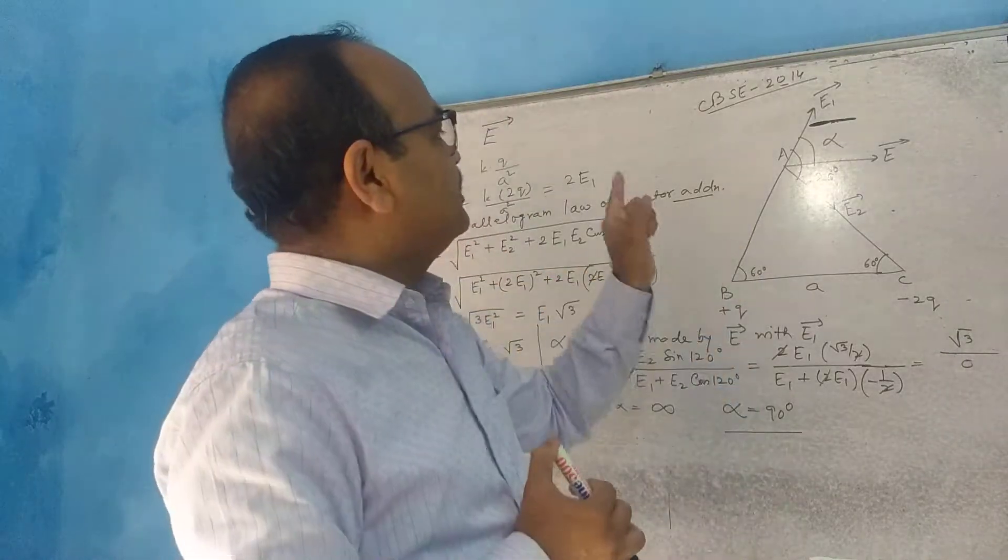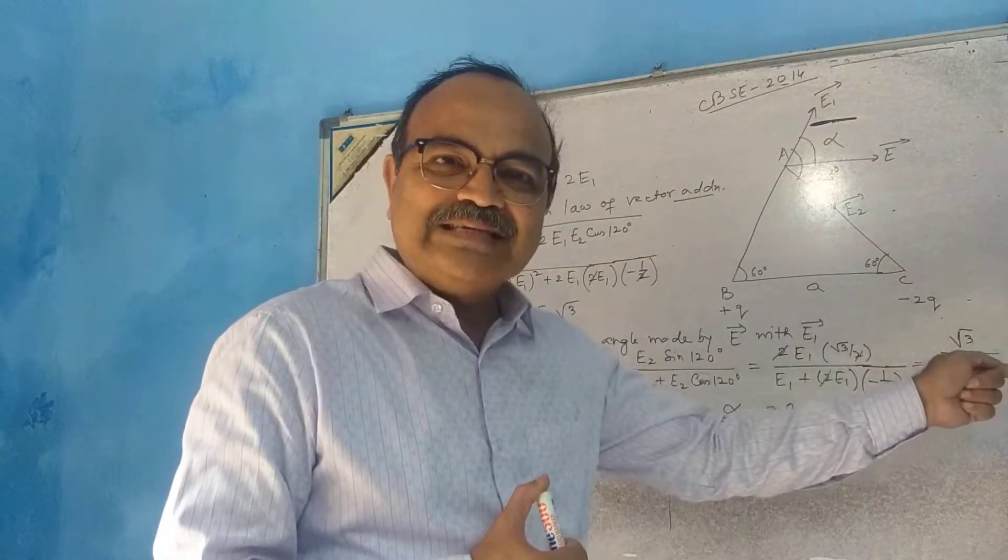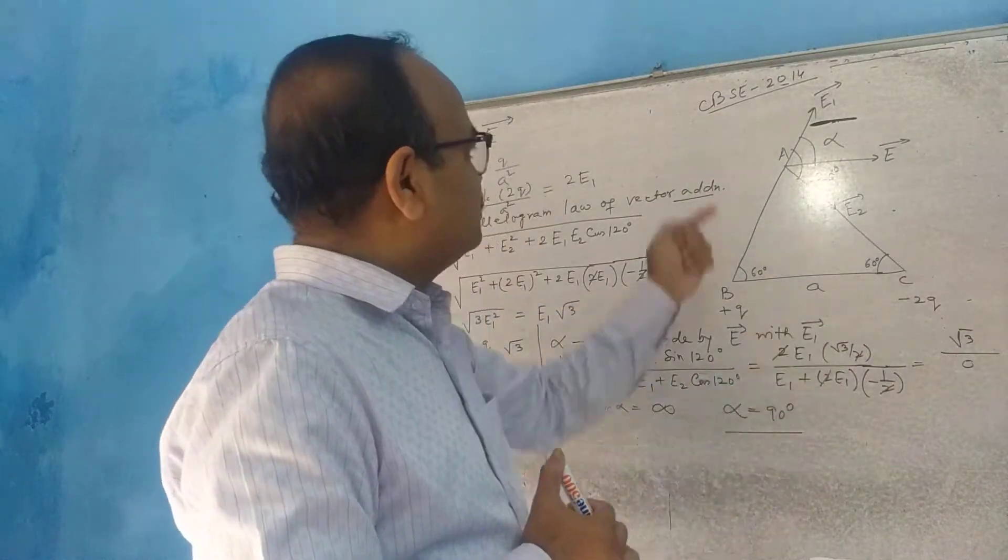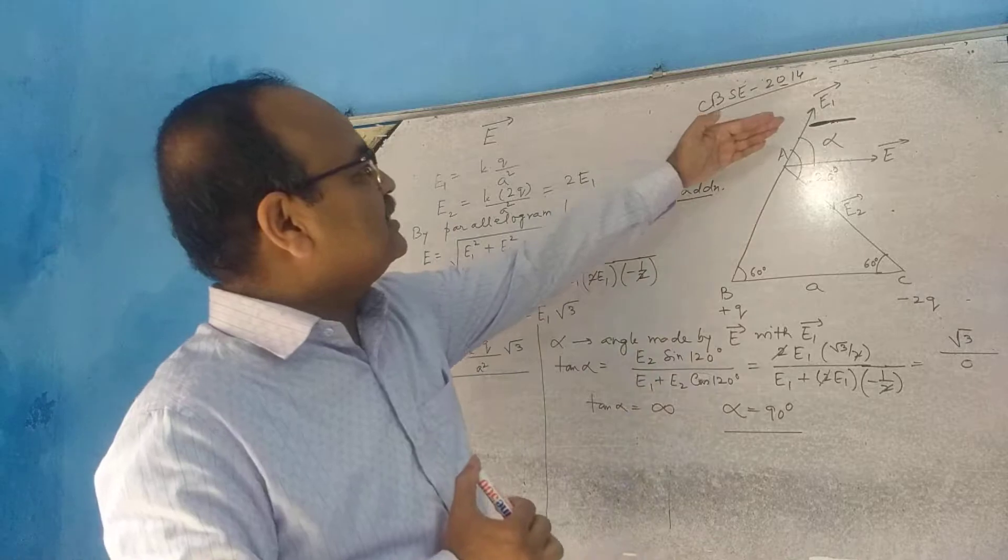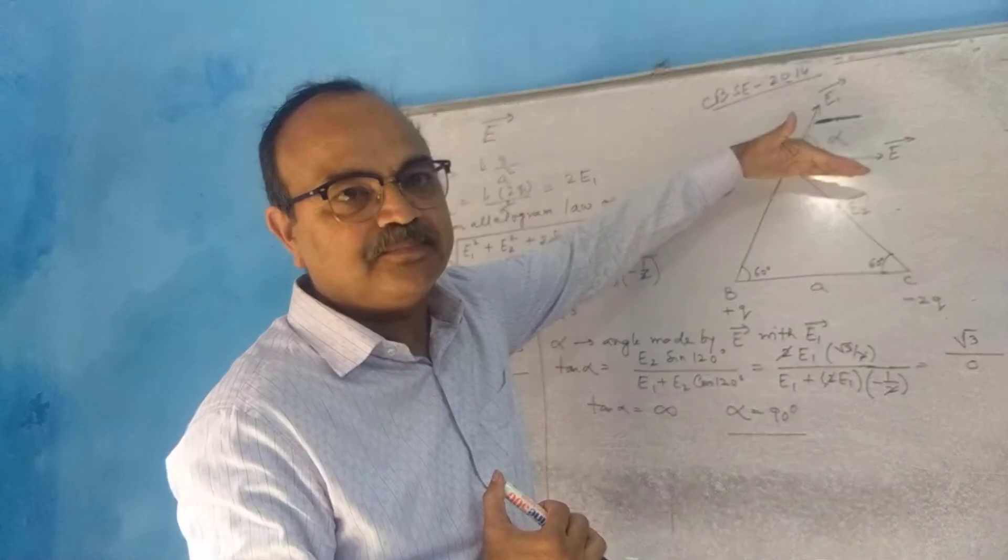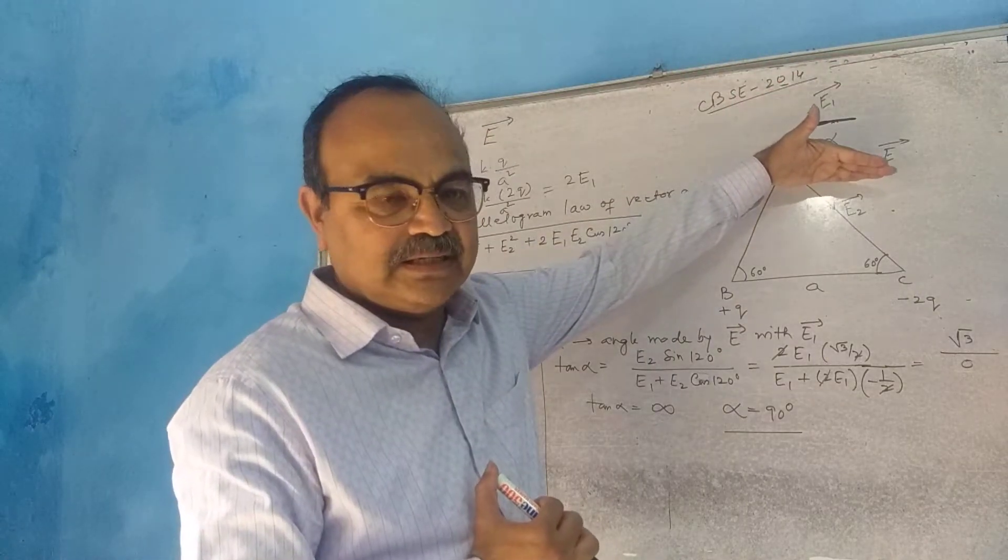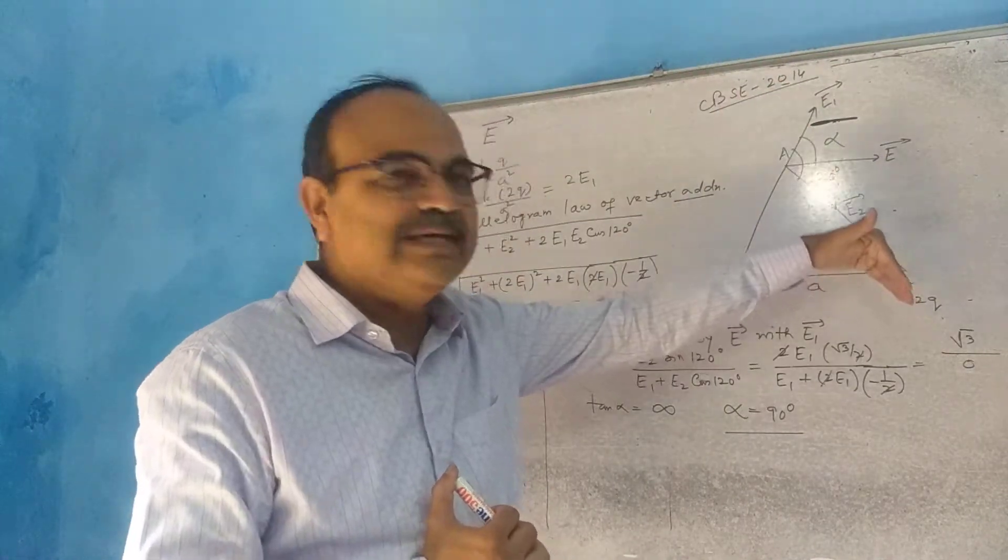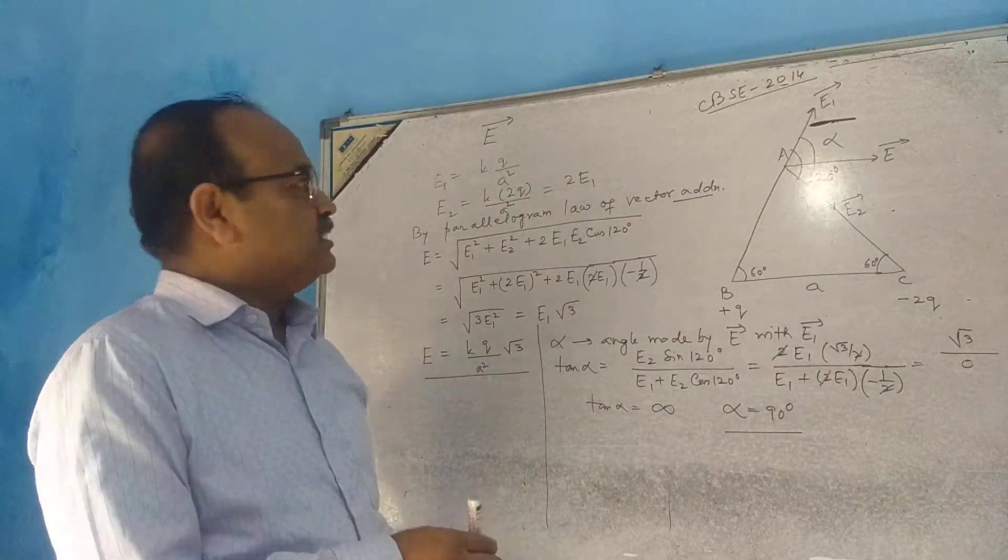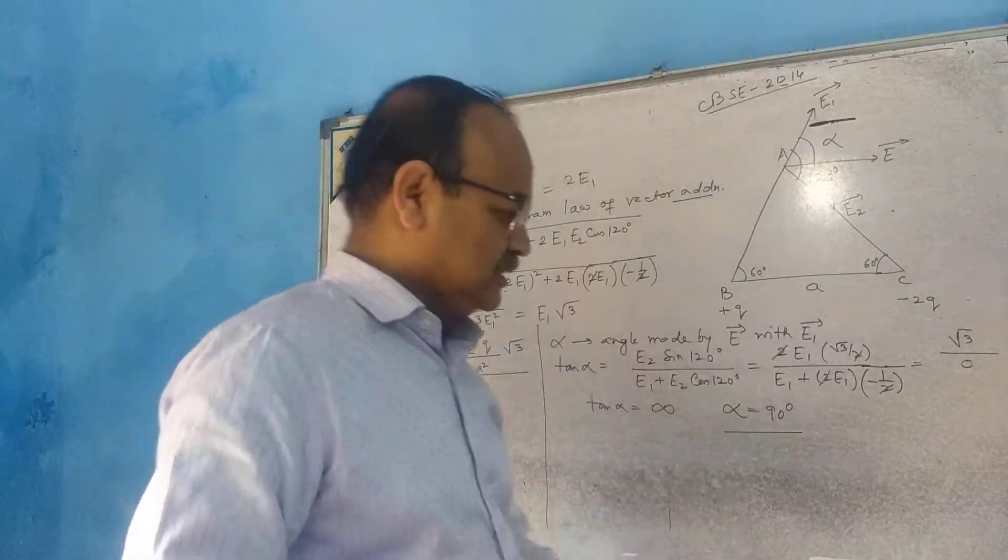Its direction will be 30 degrees with line AC, because this alpha will be 90 degrees with respect to E1. It is 90 degrees with respect to E1, and with respect to AC it will be 30 degrees.